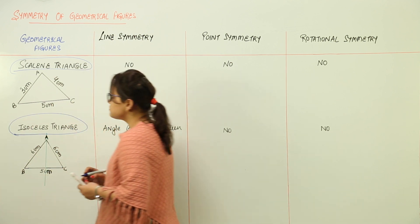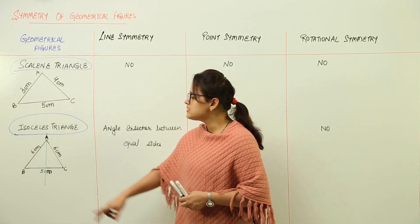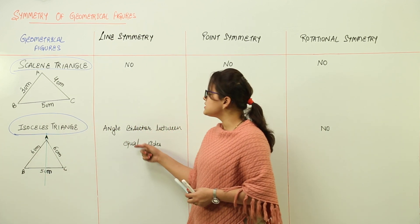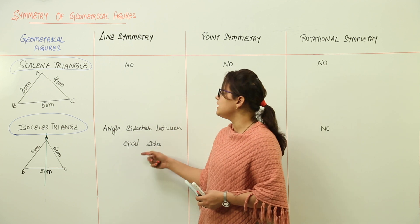Isosceles triangle means a triangle that has two sides equal to each other. We have line symmetry, which is the angle bisector between the equal sides.